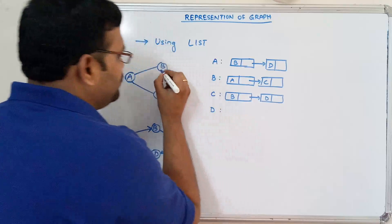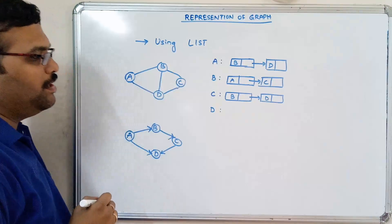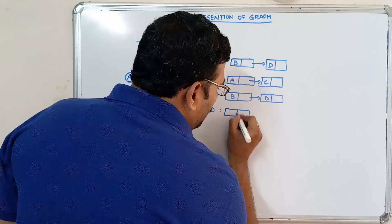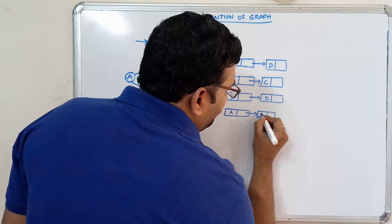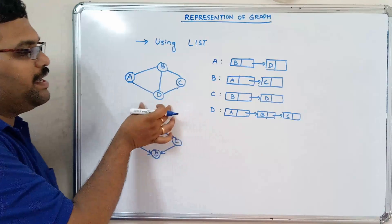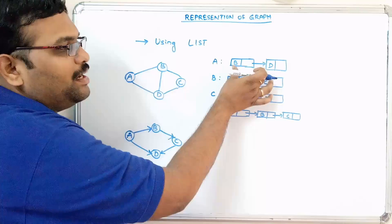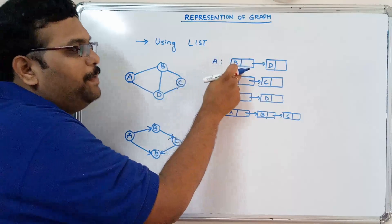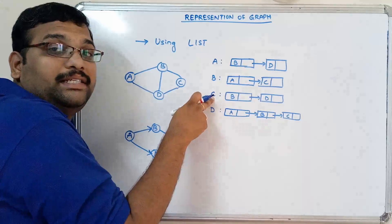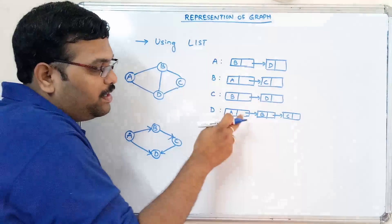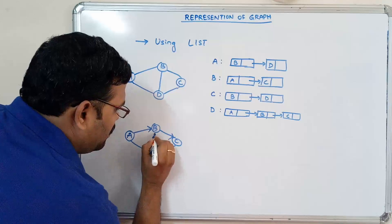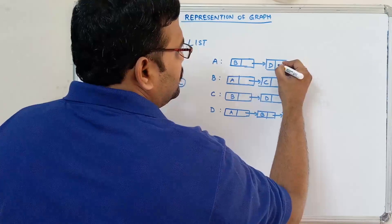And D is also having three nodes: A, B, and C. So I have to write all these — A, B, C. In such a way, we represent a graph using a linked list. So this implies A is having a node to B and to D, B is having an edge from A and to C, C is having an edge for B and D, and D is having edges for A, B, and C. The last pointers are null.